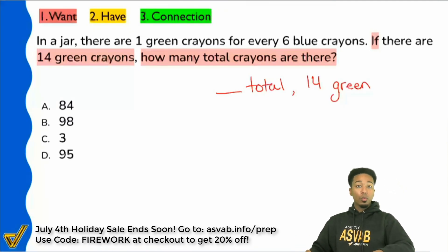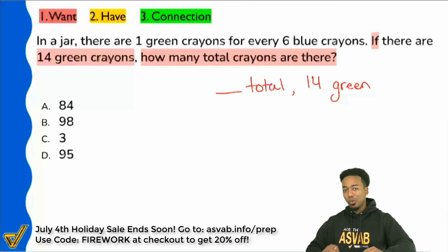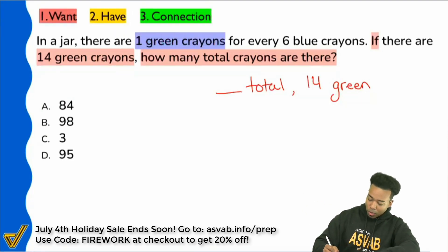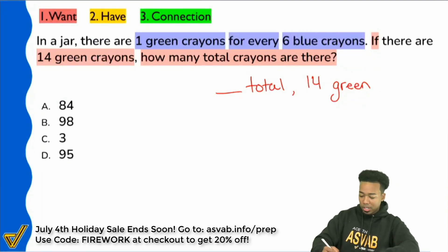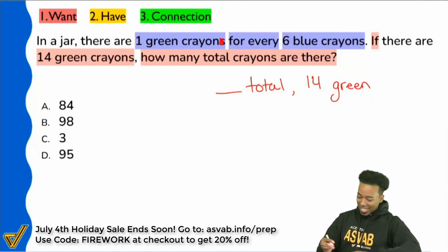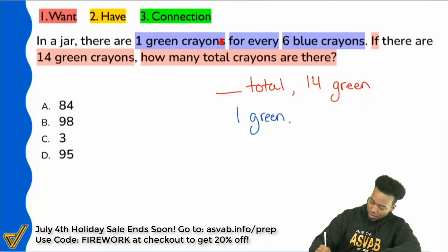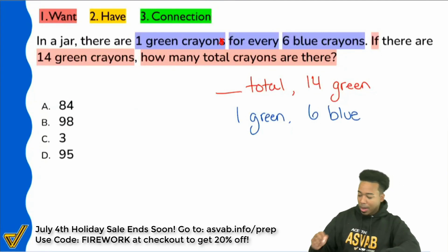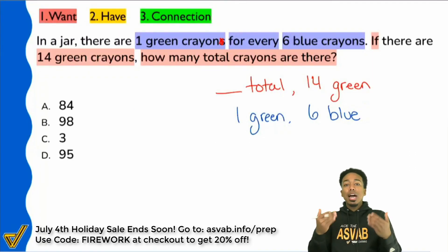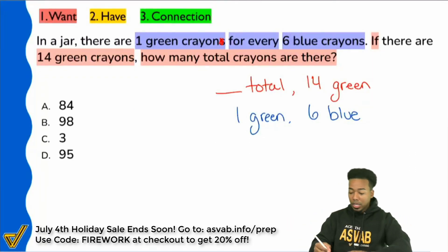Now why did I do that? This is going to be a proportion question — that's unit two, proportion word problems, if you're in my program. With proportions, you're supposed to compare the same things in the same way. I noticed right here that we have one green crayon, and it says for every six blue crayons. So we have one green and six blue. If we wanted to make a proportion, we would not be able to do so successfully yet because we're not comparing the same things in the same way.